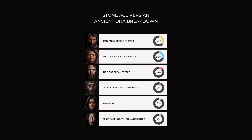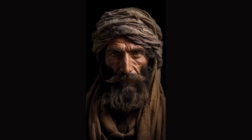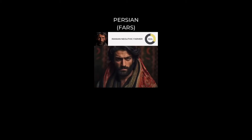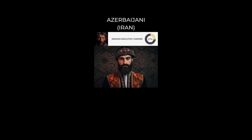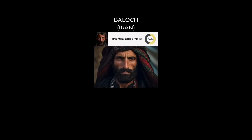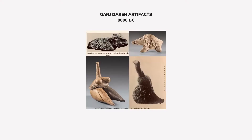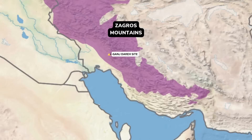Over here, I've got a Stone Age DNA breakdown of the average Iranian. And interestingly, what we see is that around 35% of their DNA is Iranian Neolithic related. The Iranian Neolithic farmers were one of the first people to inhabit the Iranian plateau and they contribute substantially to most populations within the region. It's found in the Persians, it's found in the Kurds, it's found in the Azeris, but interestingly it peaks in the Baloch. These Iranian Neolithic farmers were one of the first populations in the region to discover agriculture and they originated in the Zagros Mountains of Iran.